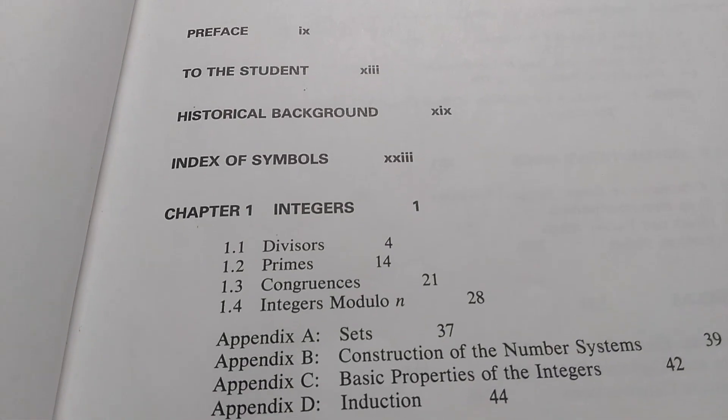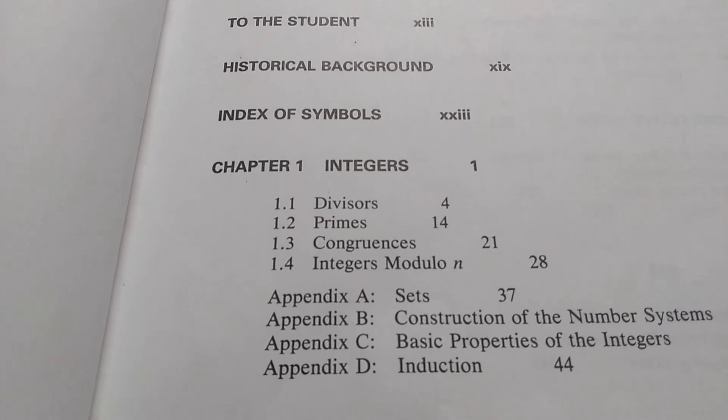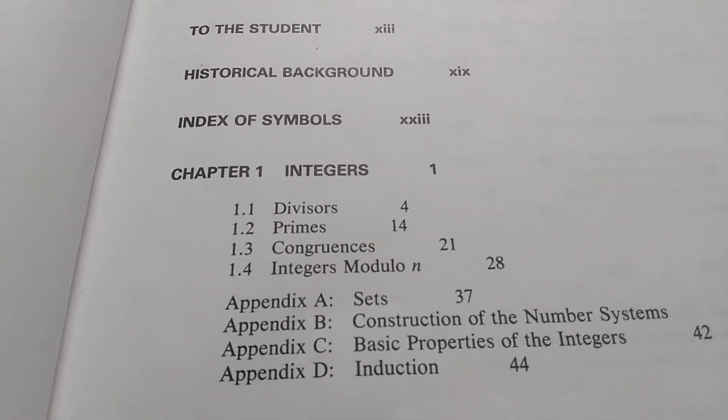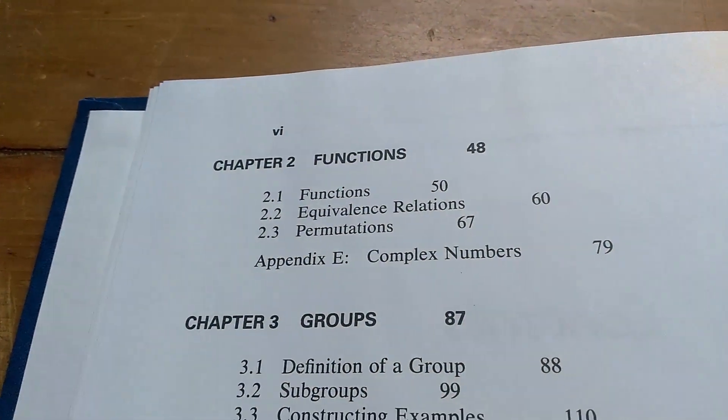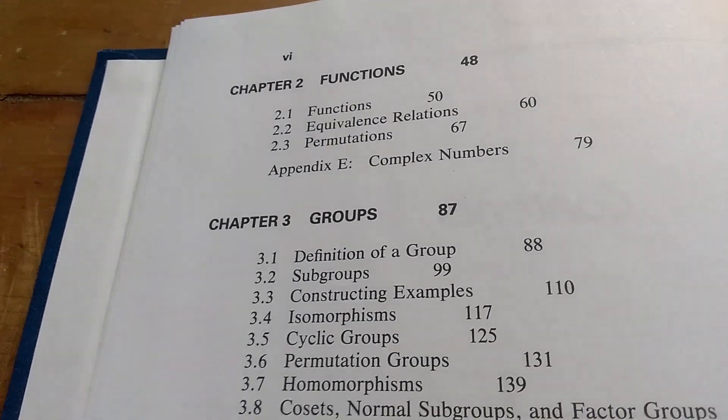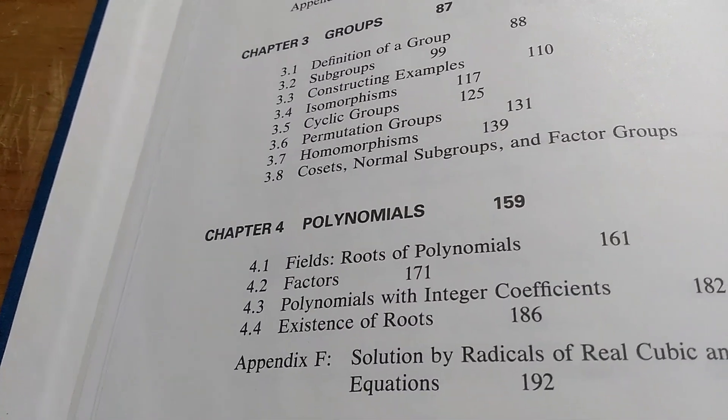So here's the table of contents. It starts off with integers. I have read some of this. It's pretty good. So I've glanced at these sections, and I've read some of this on chapter one. Let's turn the page. Functions. I've probably read all of this at some point. Same with groups. Polynomials.